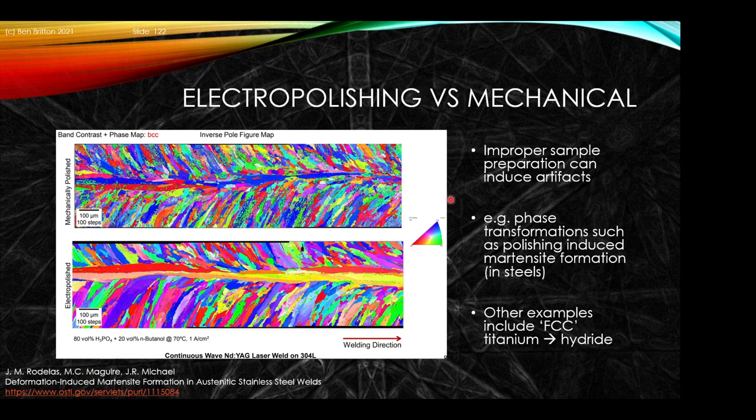Just one example: if you do the polishing badly, you can get evidence of the polishing process and not of the microstructure. This is a beautiful example from a weld in 304 stainless. There is a transformation that can happen during polishing that gives rise to fragmentation of the grain structure. If you remove that surface polishing damage with an electro-polish — using a chemical attack with applied voltage — you can get a much better representation of the microstructure present in your material.